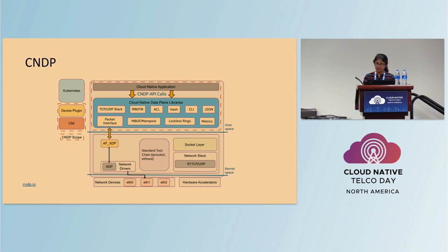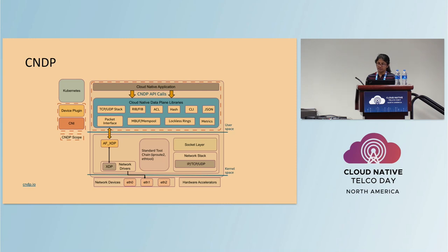AFXDP is an interface that delivers packets straight to user space, bypassing the kernel networking stack. CNDP also provides ways to expose metrics and telemetry, with examples to deploy network services on Kubernetes. CNDP consumers include cloud network function developers as well as consumers. Developers who create applications based on CNDP will be able to abstract away the low-level IO that CNDP takes care of and focus on their application. Consumers can take advantage of CNDP's deployment models for their applications using Kubernetes.